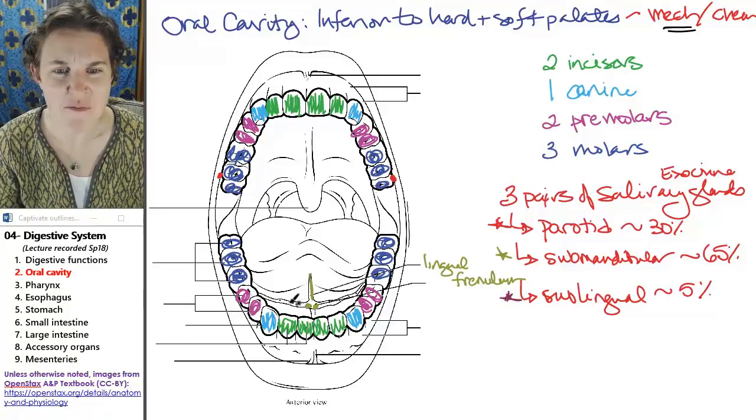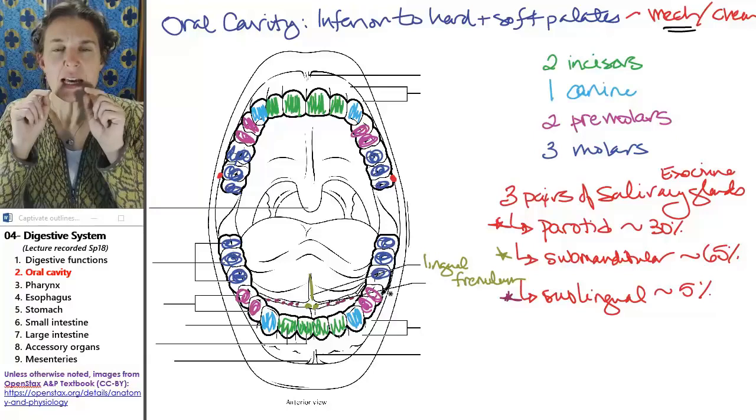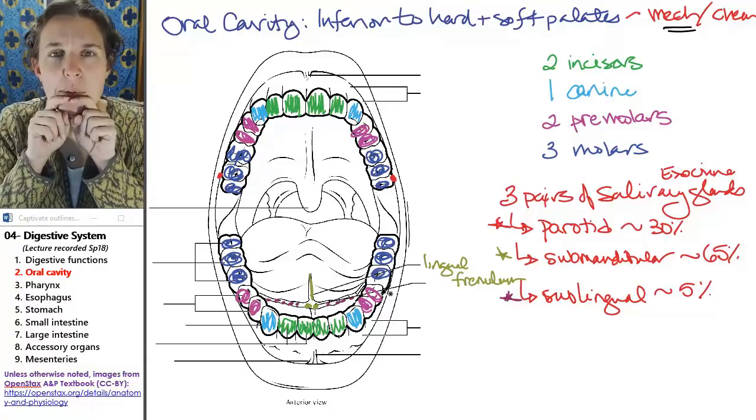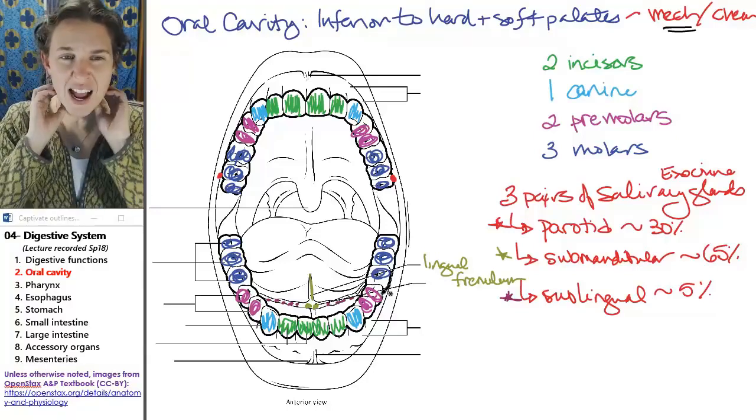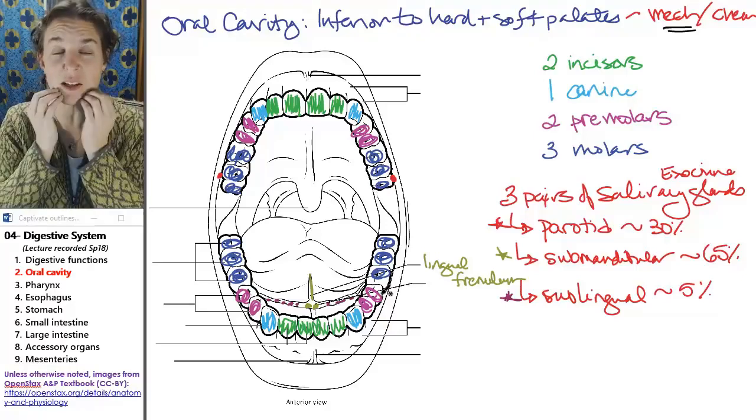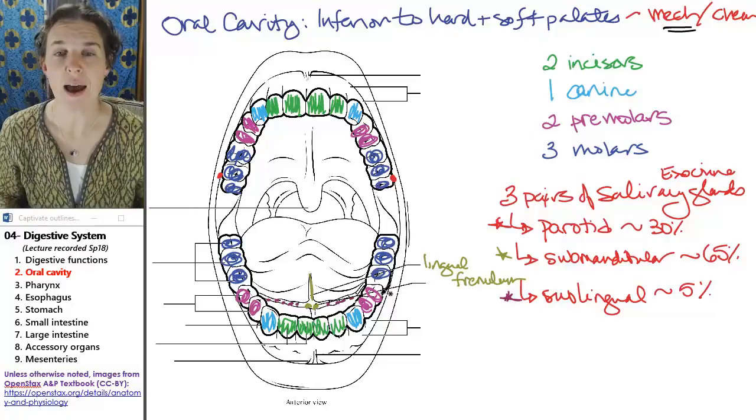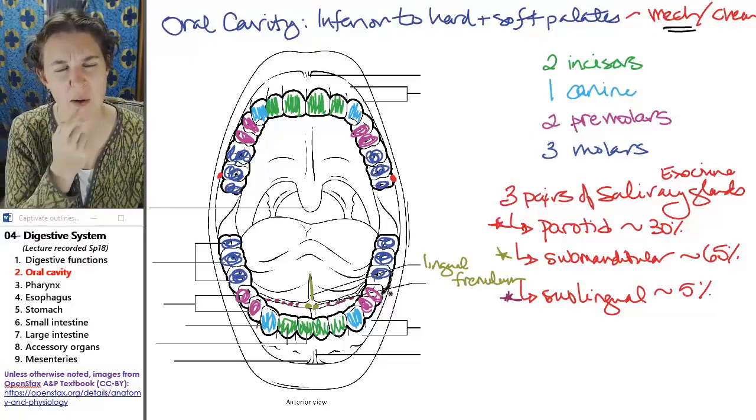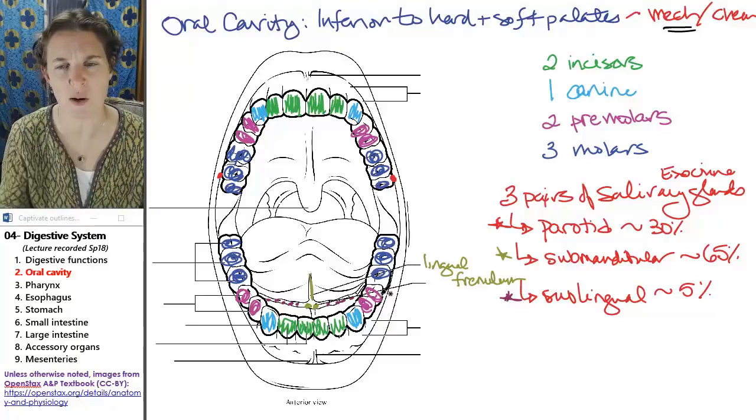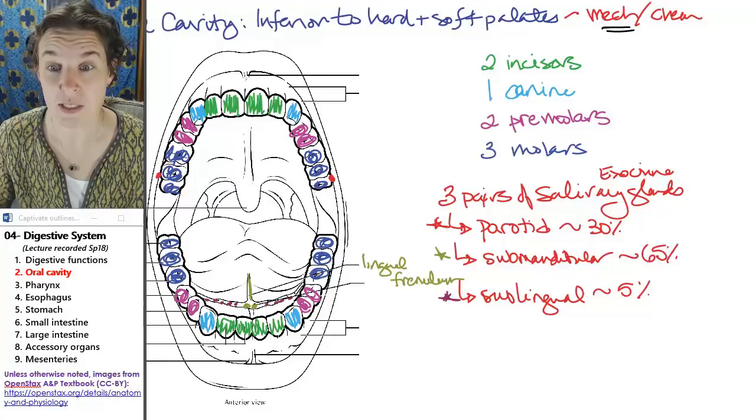The sublingual glands are beneath your tongue, but they have many, many, many, many ducts. So check these guys out. So submandibular glands are actually farther back. They're posterior to the sublingual glands, which are truly underneath your tongue. And I'll show you the glands in just a second. But I want you to be aware of where the ducts are because it's a little counterintuitive. So let's look at those glands.